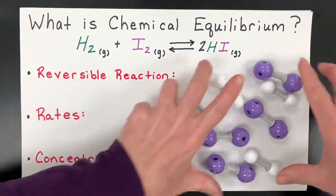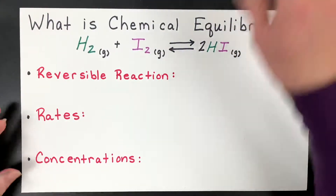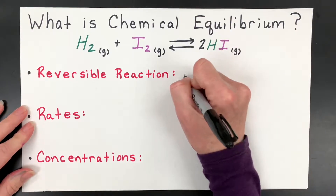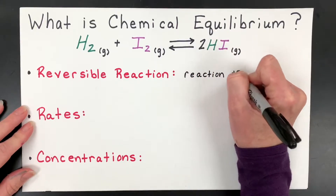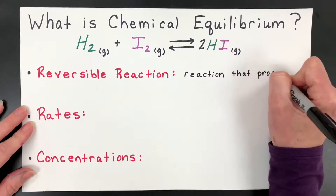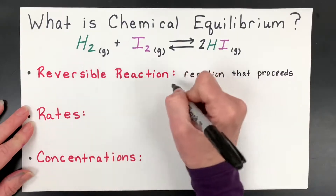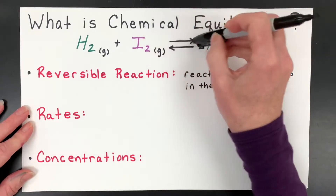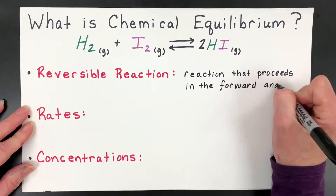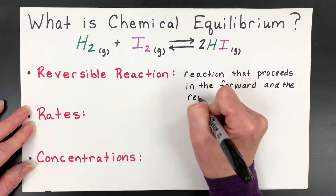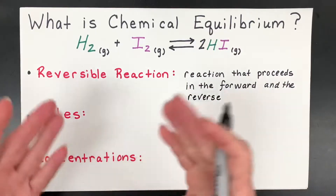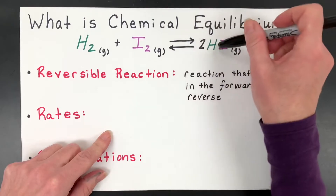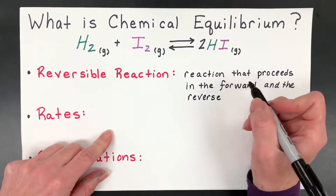Let's get started with the definitions. I'm going to move these reactants — my hydrogen and my iodine — off for just a minute before we model. So let's get the definition of reversible reaction. It's a reaction that proceeds in the forward direction, which is the normal direction you're used to, and the reverse direction. If you've watched my other videos on rates and collision theory, we never discussed the fact that these products could turn back into reactants — that's what the reverse direction means.